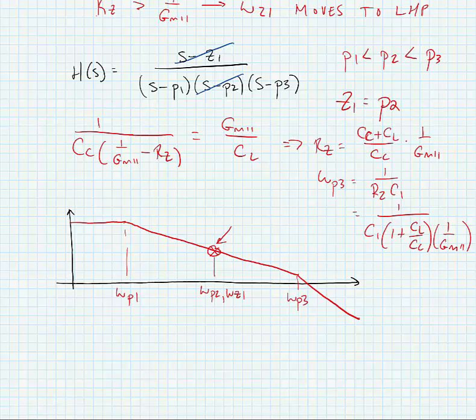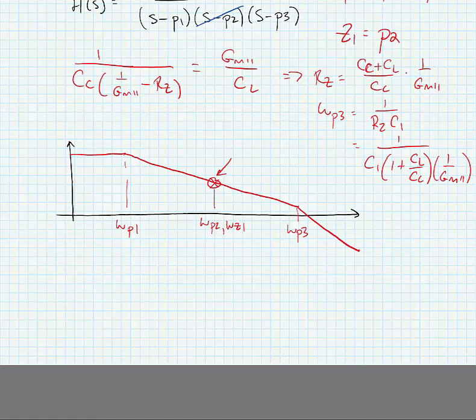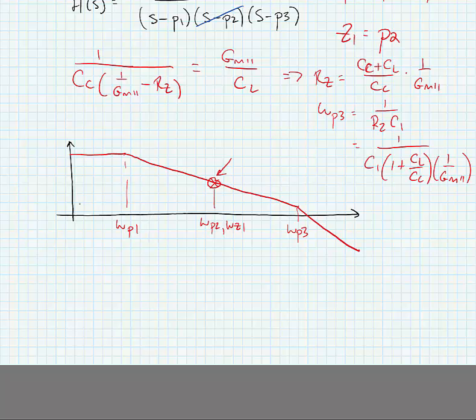The new goal for compensation, then, if we want a 45 degree phase margin, for instance, would be to design the compensation capacitor so that our closed loop gain intersected the open loop gain at omega p3 instead of omega p2. So, our new compensation for 45 degree phase margin is gm1 divided by omega p3 times acl, the closed loop gain that we desire.